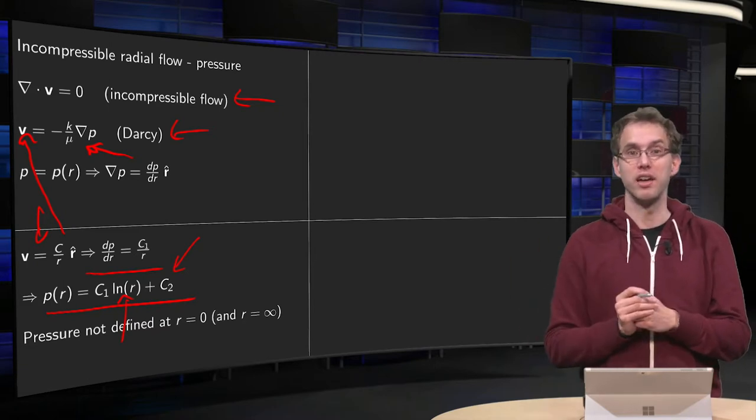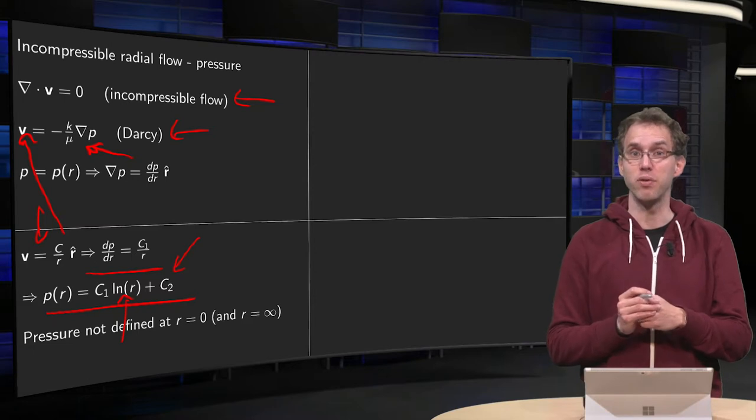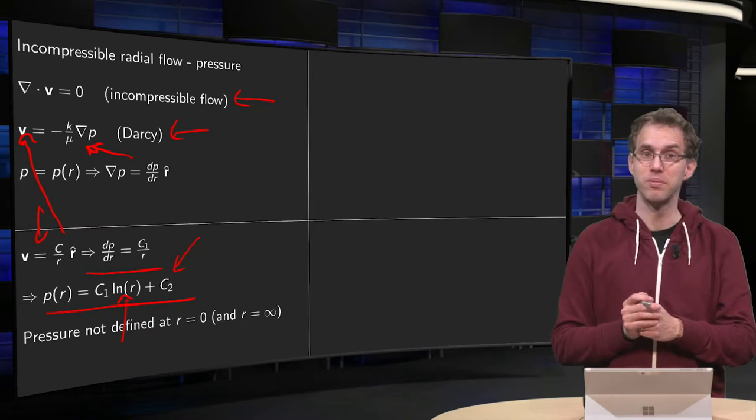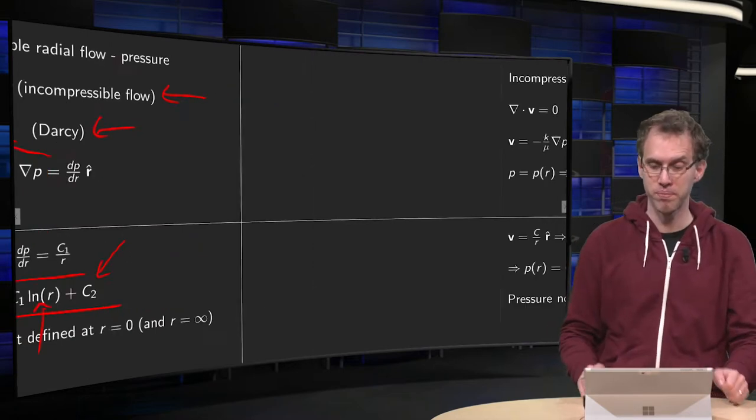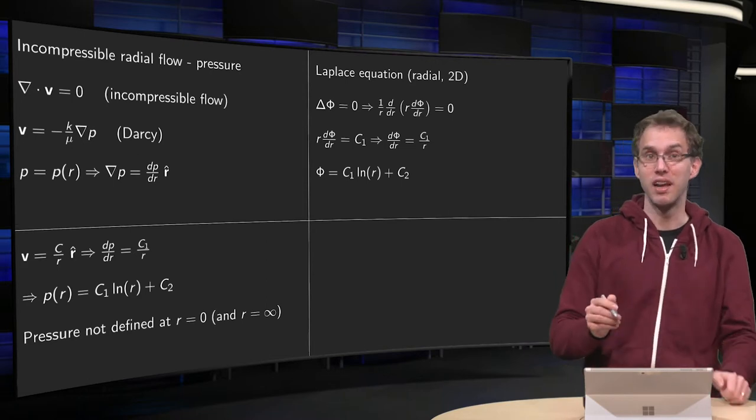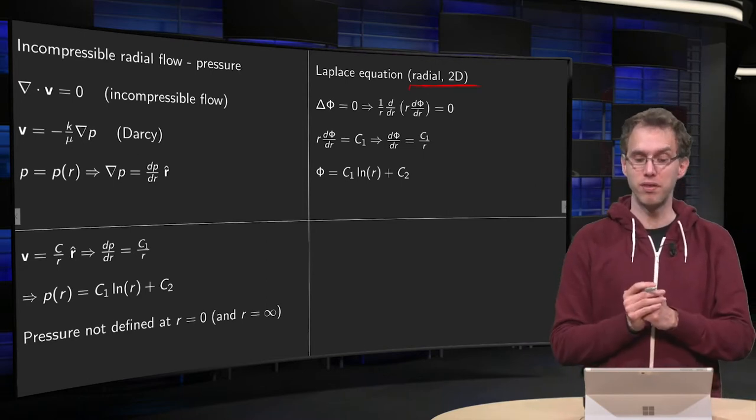Well, the singularity in infinity was always there, but now we also have a problem with our pressure at r equals zero. So, where's that coming from? Well, actually it's a general feature of the Laplace equation in radial 2D flow.